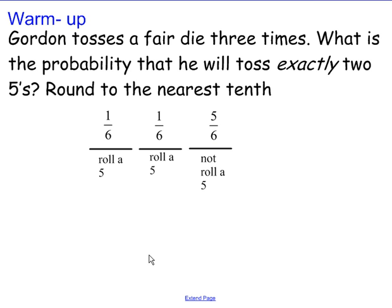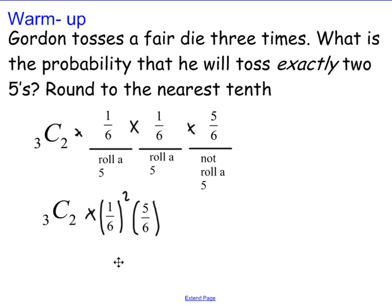Probability of not rolling a five is five out of six. We have to take into account the fact that order does not matter in which we roll these fives. So we have to multiply by a combination. We're going to go ahead and multiply these numbers out. Let's just go ahead and rewrite that as 3C2 times 1 over 6 squared times 5 over 6. And when we multiply that out, we get approximately 0.06944. Rounded to the nearest tenth, we get 0.1.